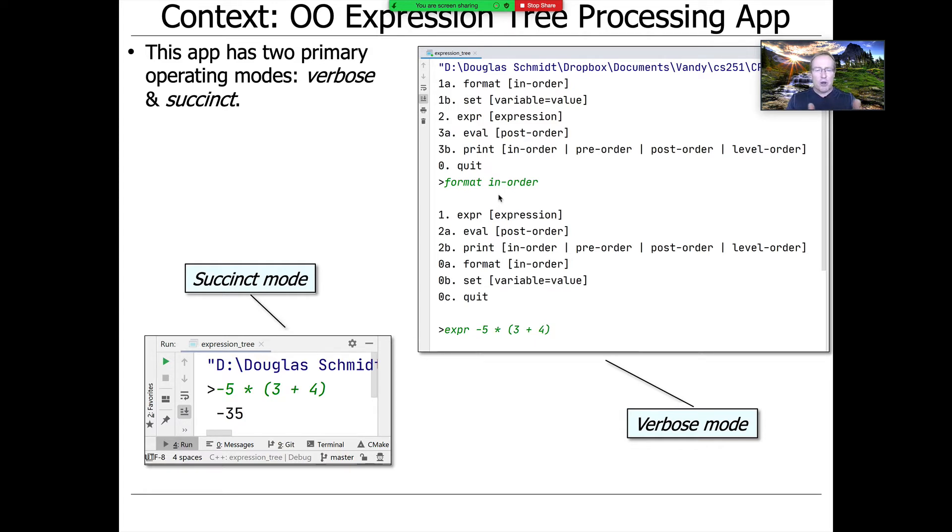In verbose mode, you type in commands using the command pattern to process those commands. Then succinct mode uses macro command to bundle everything up. So you have a very simple command line calculator interface where you can type in expressions to produce results.